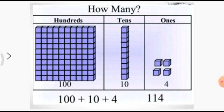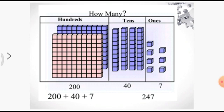Come to the next example. Here two blocks of hundreds are given, written as 200. And four blocks of tens are given, which is written as forty. And seven blocks of ones are given, that is number seven. So two hundred plus forty plus seven will give you the answer as 2, 4, 7, which is read as two hundred forty-seven.